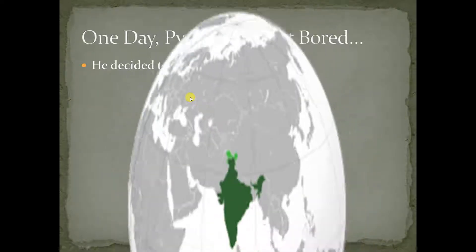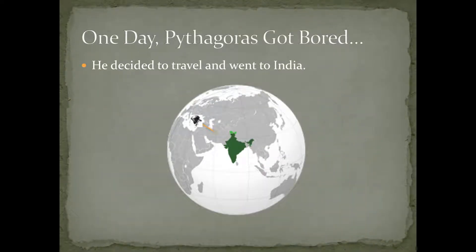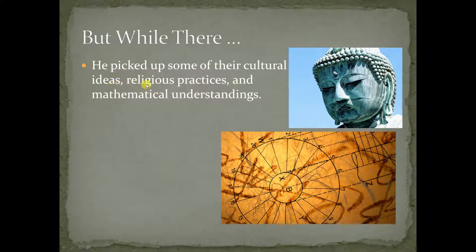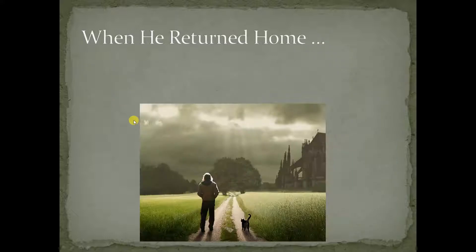One day, Pythagoras got bored. He decided to go from Greece, well, what we call Greece, to what we call now India. And when he was there, he had a great old time. He did pick up a lot of their religious ideas and their cultural practices. And he probably actually learned the Pythagorean Theorem there in India, but he took credit for it. When he returned home, he wanted to apply some of the things he learned, and he started a religious movement.